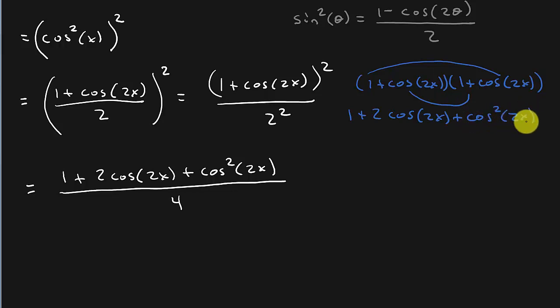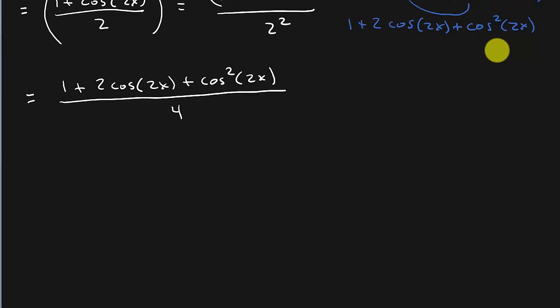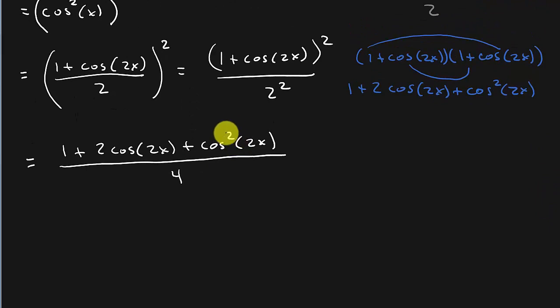So basically what we're doing here is we're trying to reduce this to where there's no exponents larger than 1, okay? All right. So you can see we still have a squared there. So what I'm going to do is I'm going to split this up into 1 over 4 plus 2 cosine 2x over 4 plus cosine squared 2x.